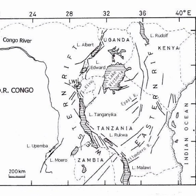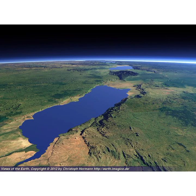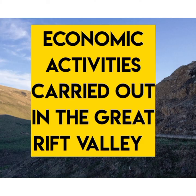The western arm also has quite a variety of mountains which include the Virunga Mountains, Mitumba Mountains, and also Mount Renzori. The lakes in this western arm are Lake Tanganyika, Lake Kivu, Lake Edward, Lake Albert, and also Lake George, among others.